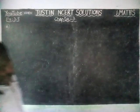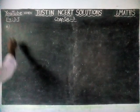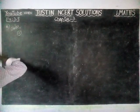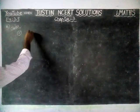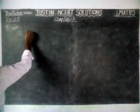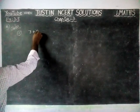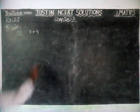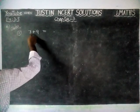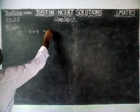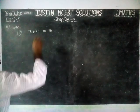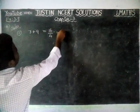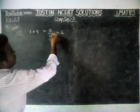We are going to check two consecutive odd numbers. We will take the first example: 7 plus 9. 7 and 9 are two consecutive odd numbers. When we add 7 plus 9, it is equal to 16. This 16 is divisible by 4 — 16 divided by 4 is equal to 4. Yes, this is divisible by 4.